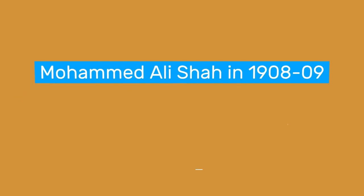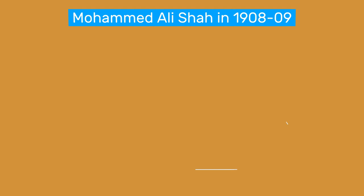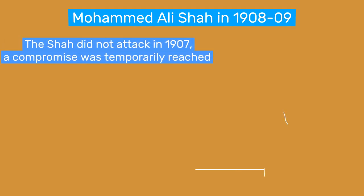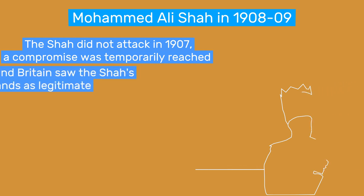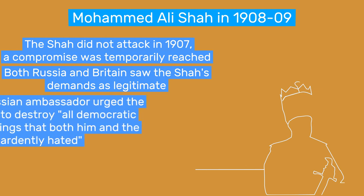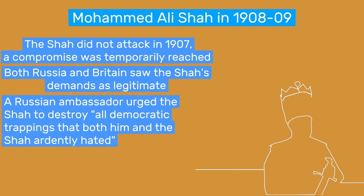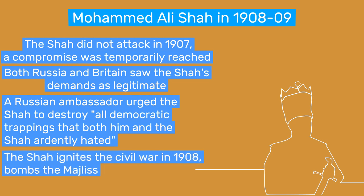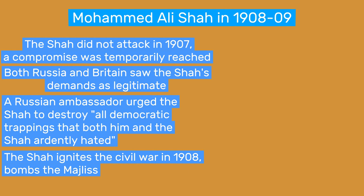Returning to Muhammad Ali Shah — an uncertain compromise was reached that prevented an imminent attack by the Cossack Brigade. Under it, the Shah promised to respect the Majlis and dismissed some of his most hated advisers, while the Majlis also punished some of its most radical opponents of the Shah. However, a standoff between the Shah and the Majlis continued into 1908. During this time, the Russian and British legations sided with the Shah and sent threatening telegrams to the Majlis to back down and accept the Shah's demands. The Russians also sent a message to the Shah urging him to destroy, in their words, all the democratic trappings that both the Russian consul and the Shah ardently hated. Eventually, the Cossack Brigade was sent into the city, the building of the Majlis was surrounded and shelled with artillery. Most constitutionalists were apprehended or exiled, and some were killed. Tehran was therefore captured very quickly by Muhammad Ali Shah's forces. On the other hand, the siege of Tabriz became the most dramatic center of resistance.